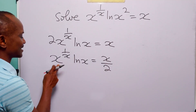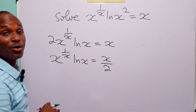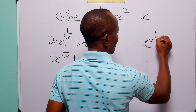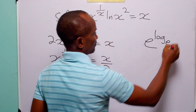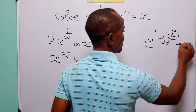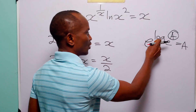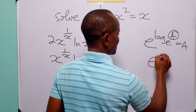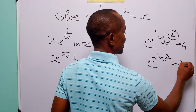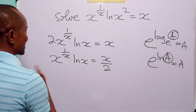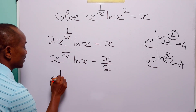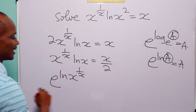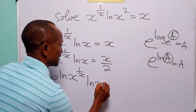Now we will rewrite the term x to the power 1 over x. Remember that e to the power log base e of a is equal to a, and since log base e is the natural logarithm, e to the power ln a equals a. So we rewrite this as e to the power ln x to the power 1 over x, times ln x.